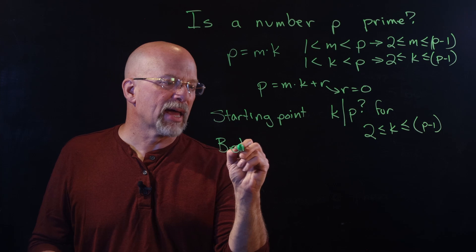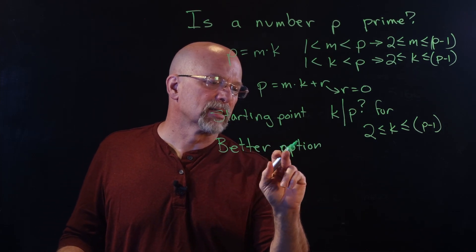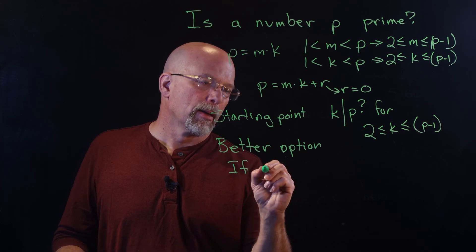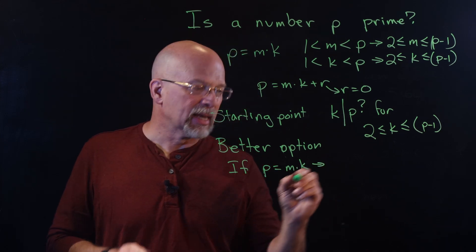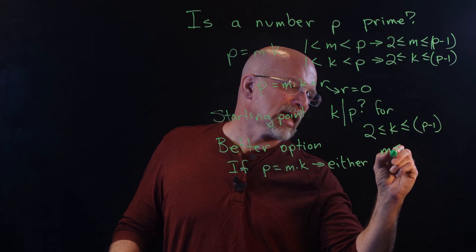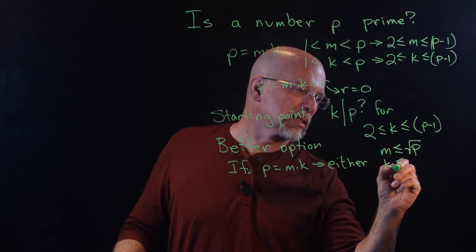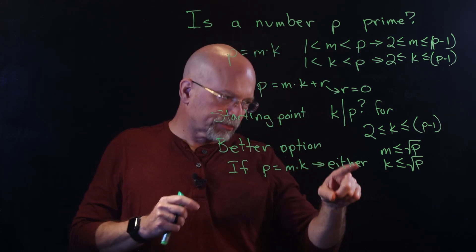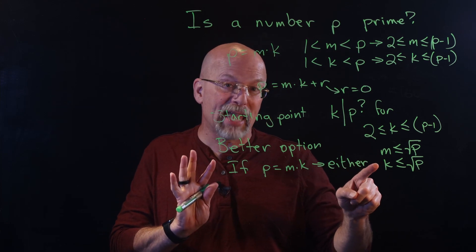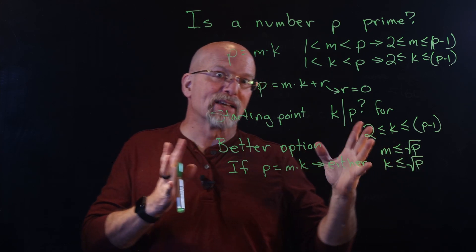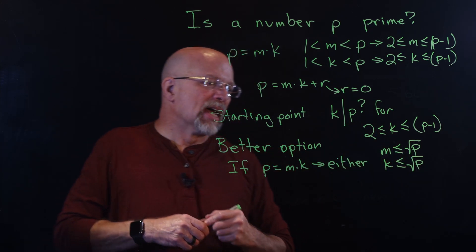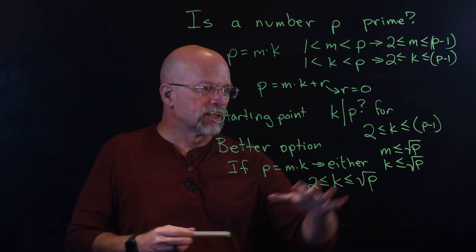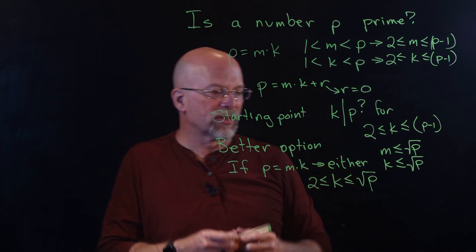There is a better option: we really don't need to go all the way up to P minus 1. If P equals M times K, then either M is less than or equal to the square root of P, or K is less than or equal to the square root of P. So we only need to evaluate from 2 up to the square root of P, which significantly cuts down evaluation time.